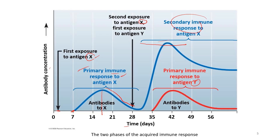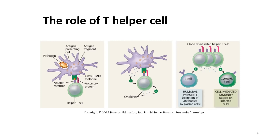This graph also shows the primary immune response made to the newly encountered antigen Y, and the cycle repeats if antigen Y infects the body for a second time. A type of T cell called the T helper cell would trigger both the antibody-mediated immunity and the cell-mediated immunity.